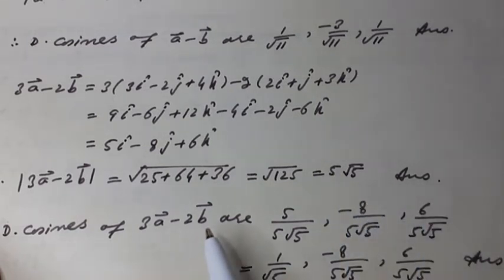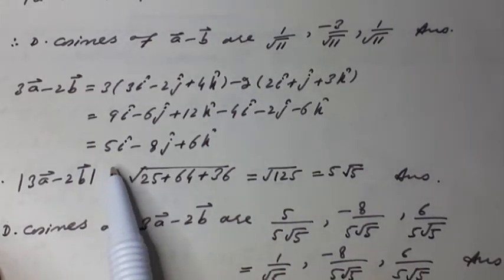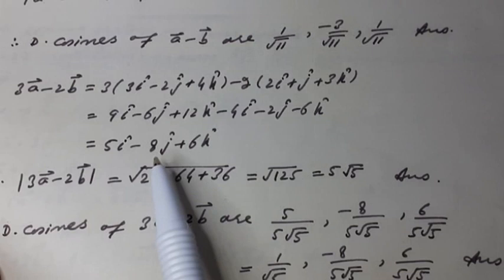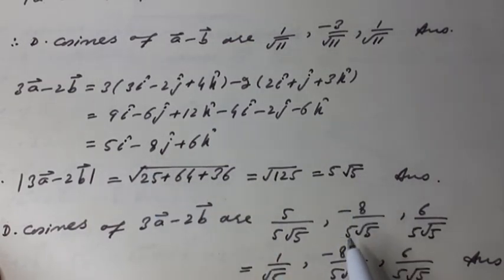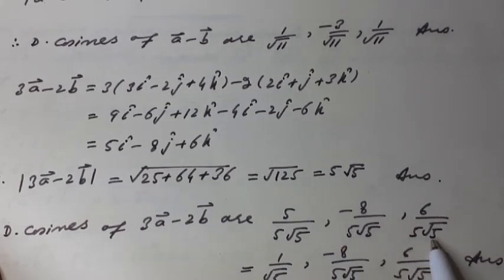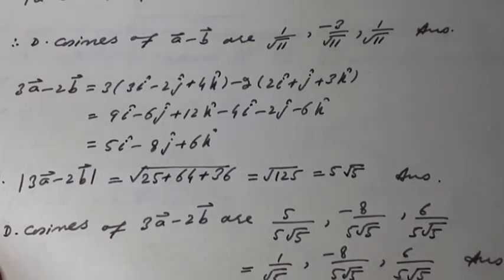Therefore, the direction cosines of 3a vector minus 2b vector are: 5/(5√5), −8/(5√5), 6/(5√5), which can be simplified to 1/√5, −8/(5√5), 6/(5√5). Answer.